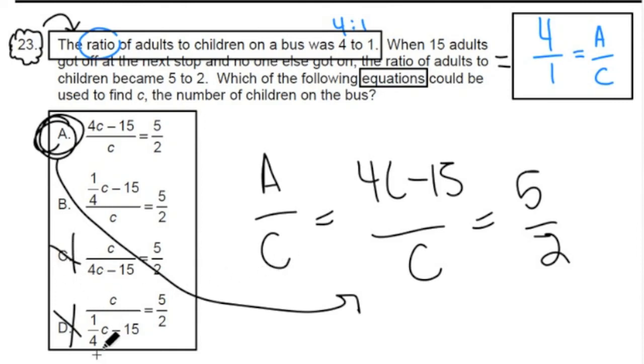And that's going to increase your chances of getting A correct, all right? So make sure you're not only able to set this thing up, but also you're able to see very quickly, just by doing this initial step, why C and D are wrong. All right, team. The answer here is A.